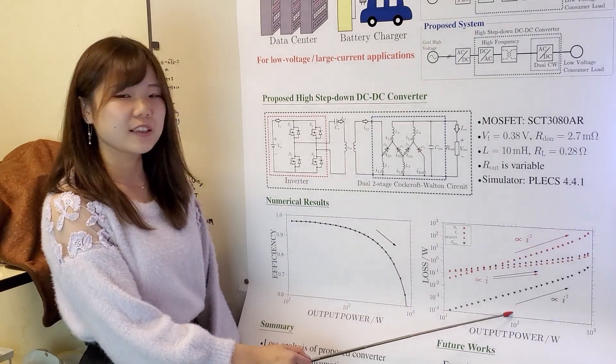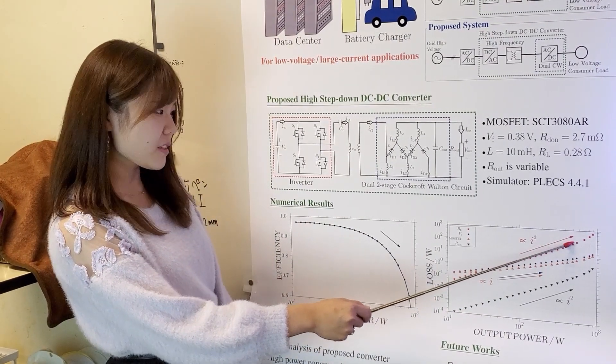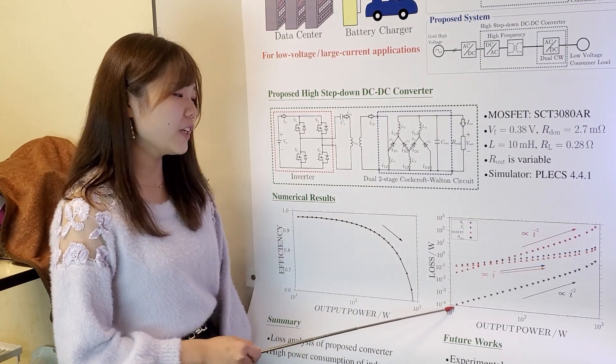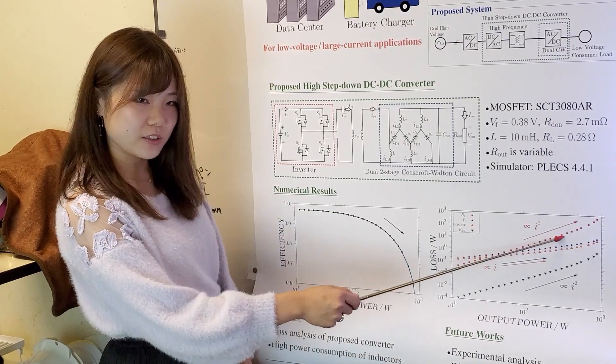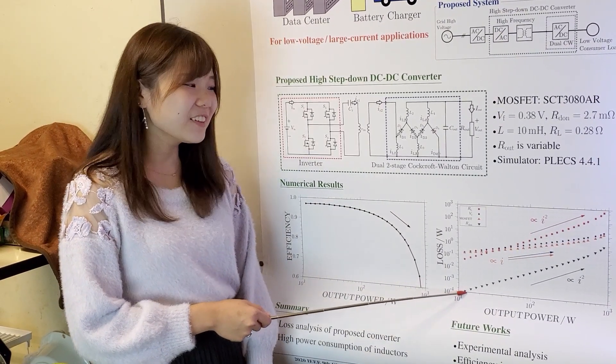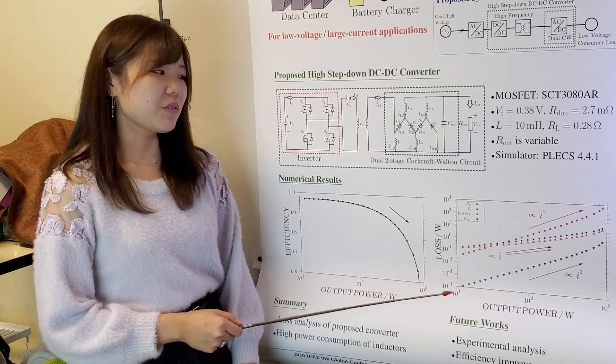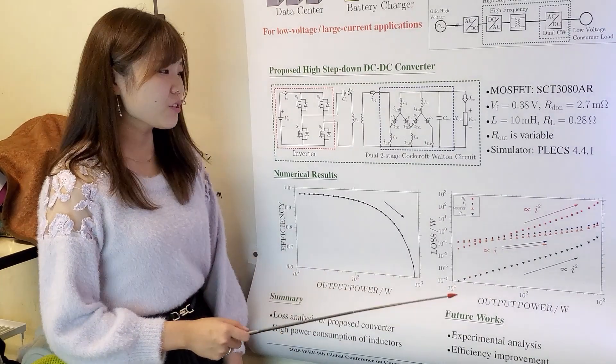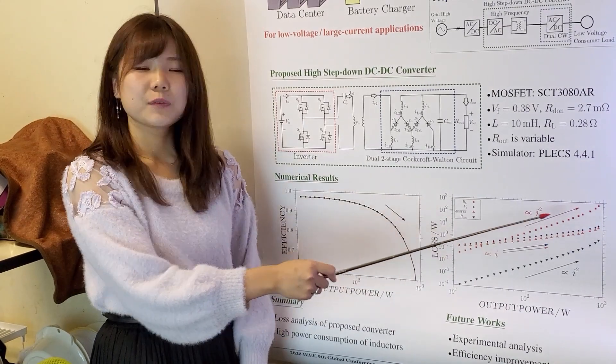This graph shows the analysis of converter loss by internal resistance of inductors, forward voltage of diode, MOSFETs, and on-resistance of diode. Loss of internal resistance of inductors and on-resistance of diode increase highly than others because output power is proportional to square of current. On the other hand, the loss of MOSFETs and forward voltage of diode increase proportional to current.